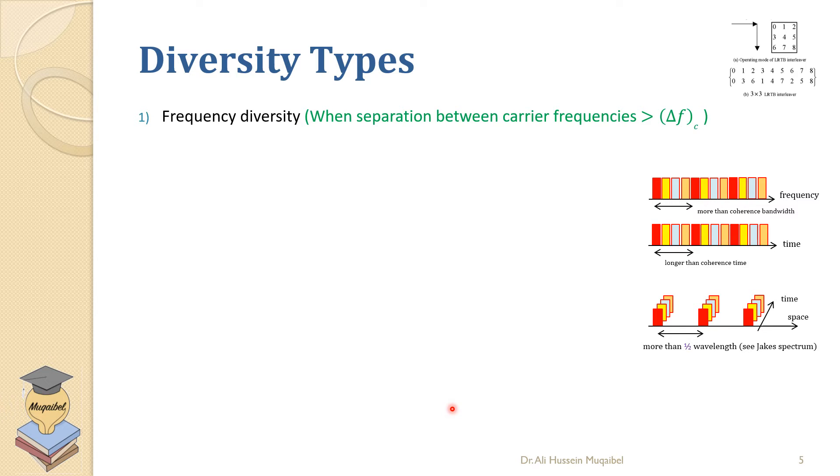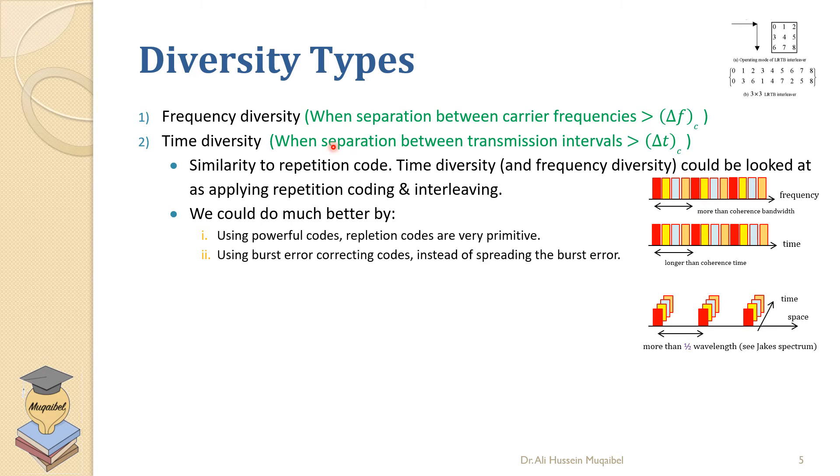We can also use time diversity when the separation between the transmission intervals is large. We send at two different times, but we have to make sure that we are sending at two different times that are greater than the coherence time.